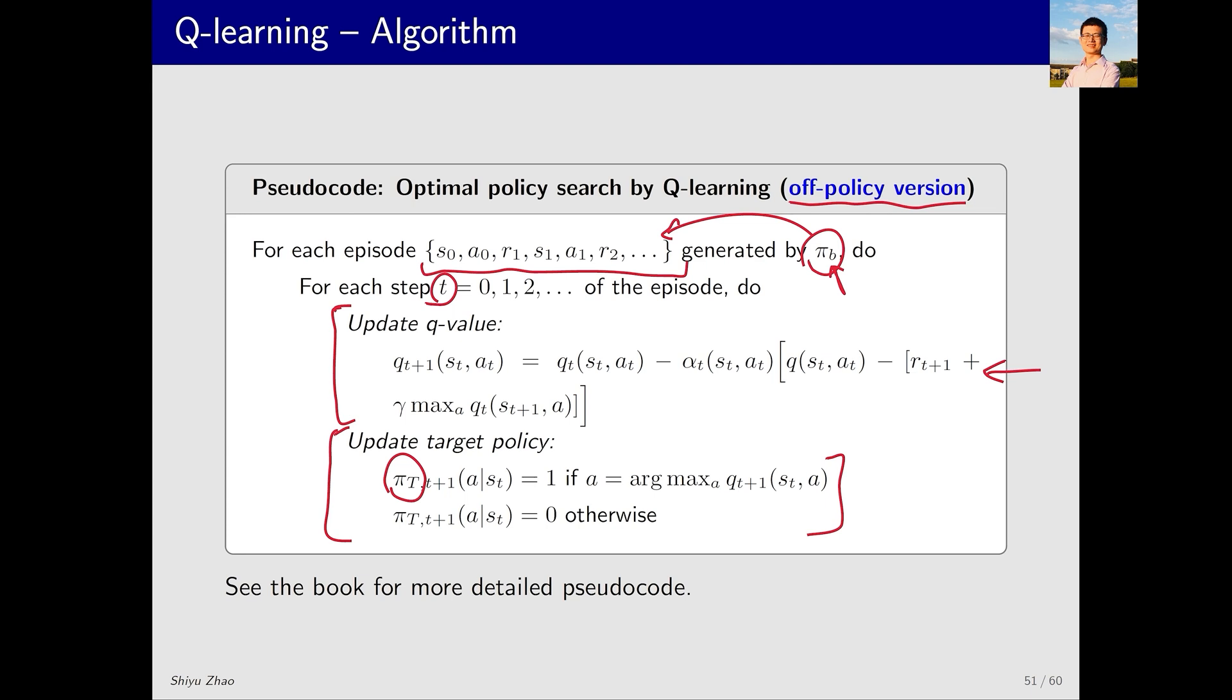As the estimation of Q-values becomes more accurate, π_T will also converge to an optimal policy. Clearly there are two distinct policies here, π_B and π_T. This is a clear off-policy implementation.